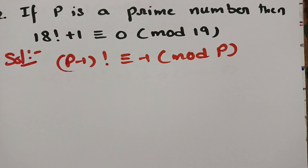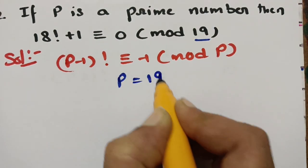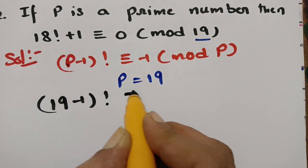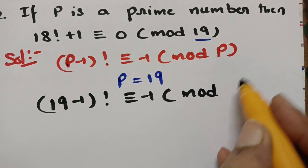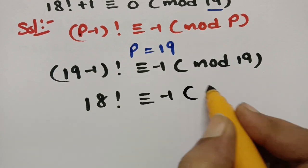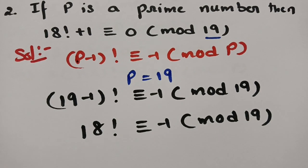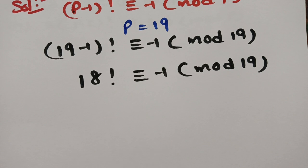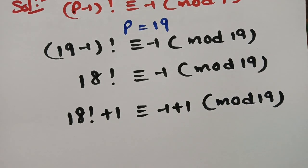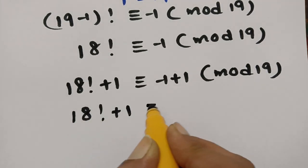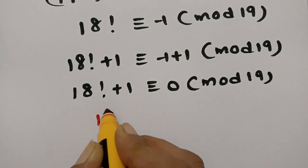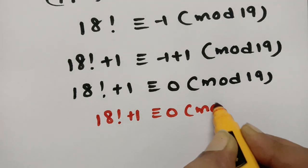We take P = 19. Substituting P = 19 into Wilson's theorem: (19−1)! ≡ −1 (mod 19), so 18! ≡ −1 (mod 19). Adding 1 to both sides: 18! + 1 ≡ 0 (mod 19). Therefore, when P is a prime number, 18! + 1 ≡ 0 (mod 19).